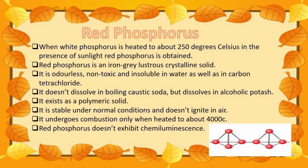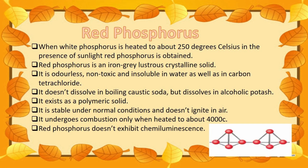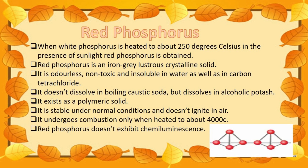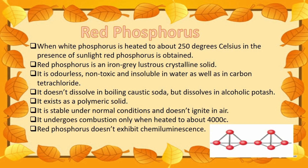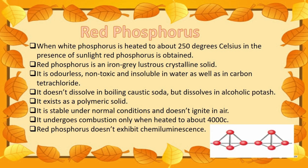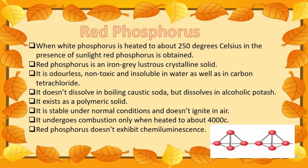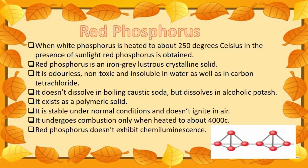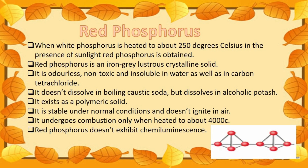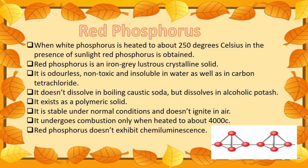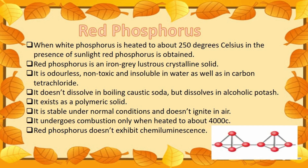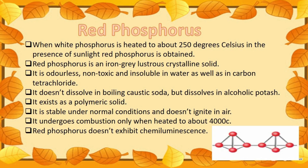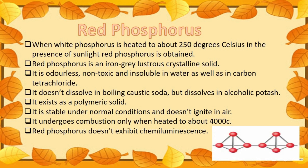When white phosphorus is heated to about 250 degrees Celsius in the presence of sunlight, red phosphorus is obtained. Red phosphorus is an iron-gray lustrous crystalline solid. It is odorless, non-toxic, and insoluble in water as well as in carbon tetrachloride. It does not dissolve in boiling caustic soda but dissolves in alcoholic potash, and it exists as a polymeric solid.